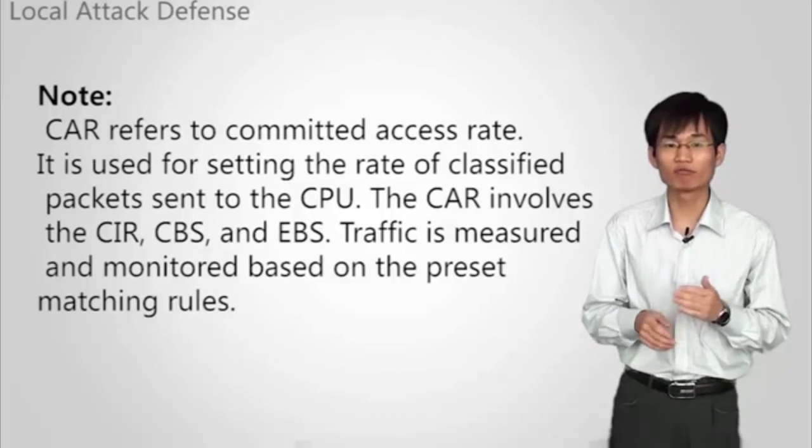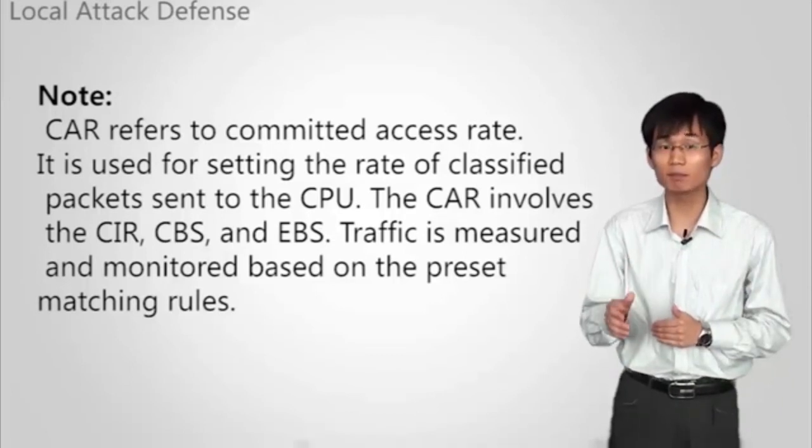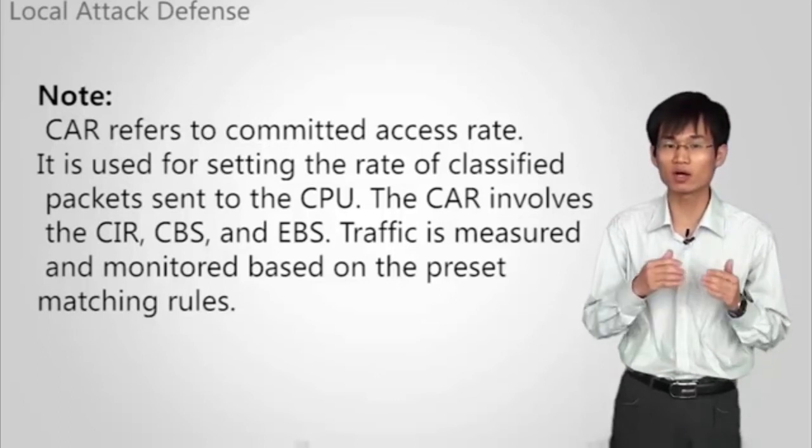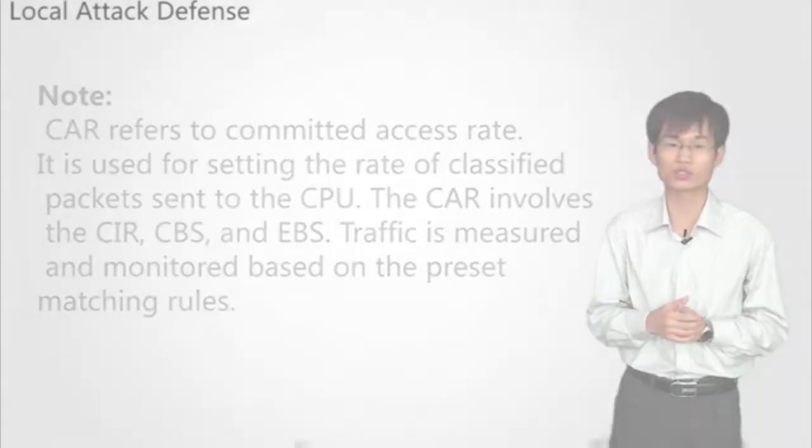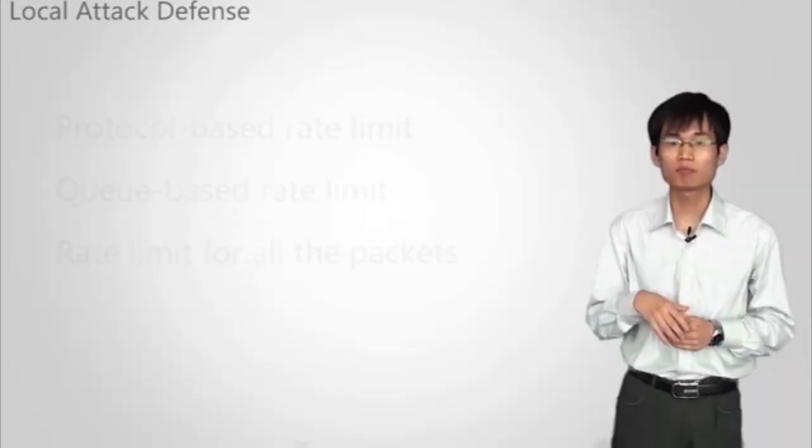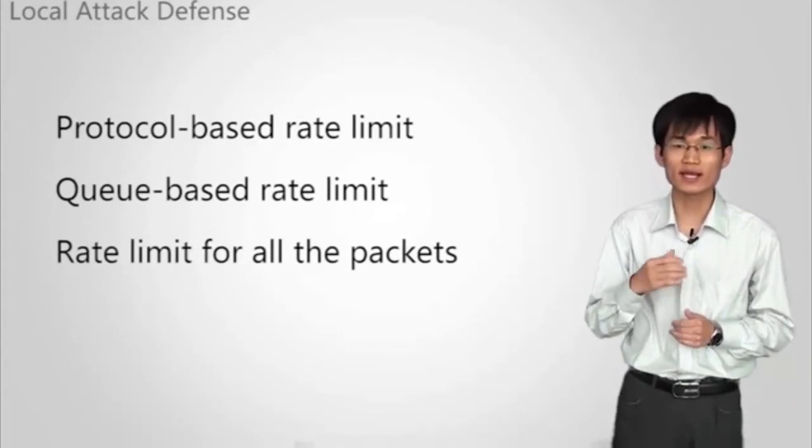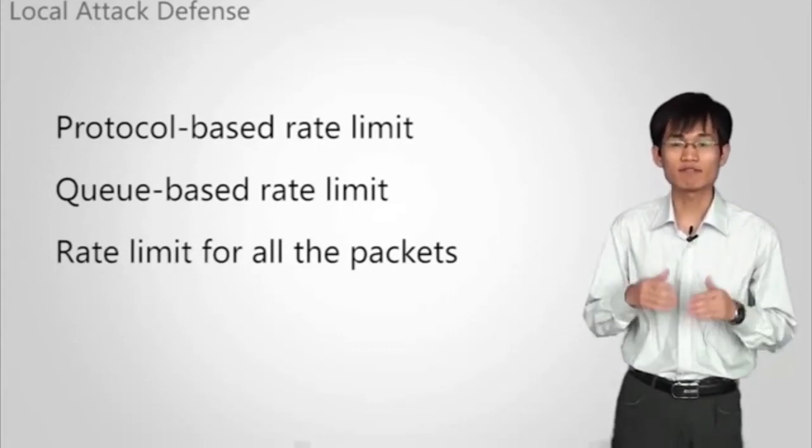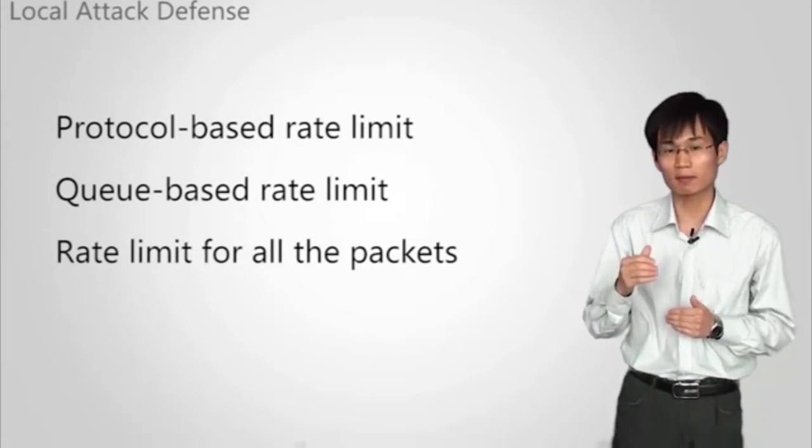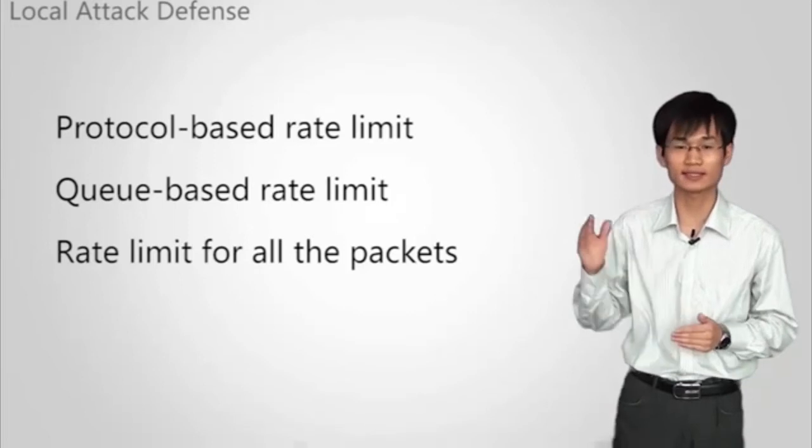The CAR involves the CIR, CBS, and PBS. Traffic is mirrored and monitored based on the packet matching rules. You can define the blacklist using the ACL. The CAR is used to set the rate of classified packets sent to the CPU. CPU attack defense provides hierarchical device protection: protocol-based rate limit, queue-based rate limit, and rate limit for all the packets. If all the preceding rate limits are set, the smallest rate limit takes effect.